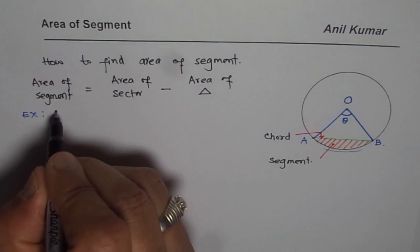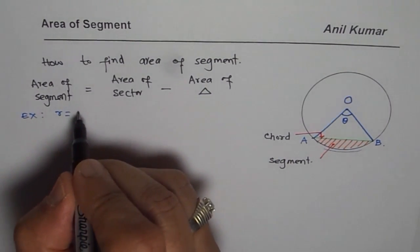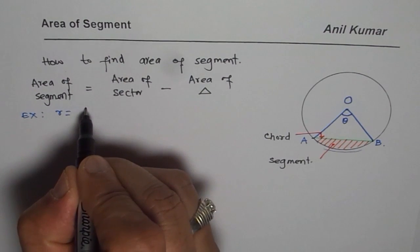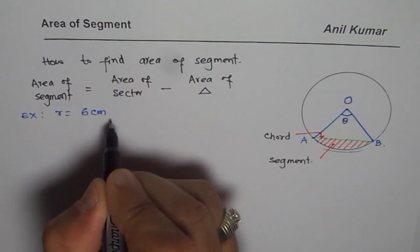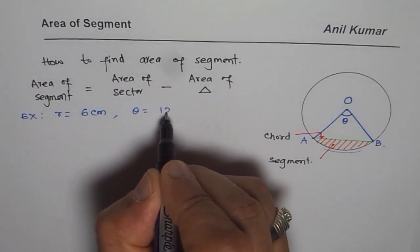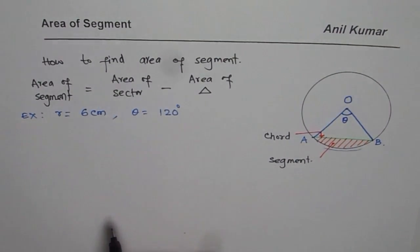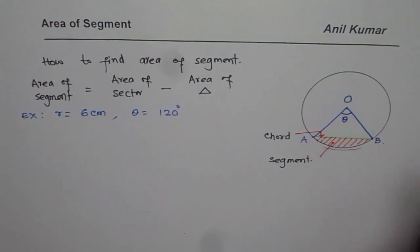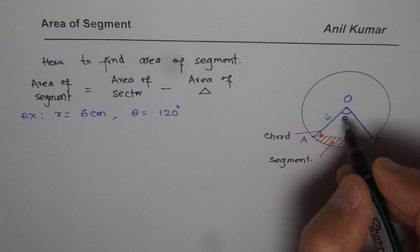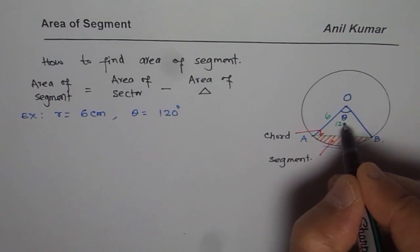So let us say radius is 6 centimeters. And let us take this angle theta as 120 degrees. So if radius is 6 centimeters, let me write down here 6, and this is 120 degrees.